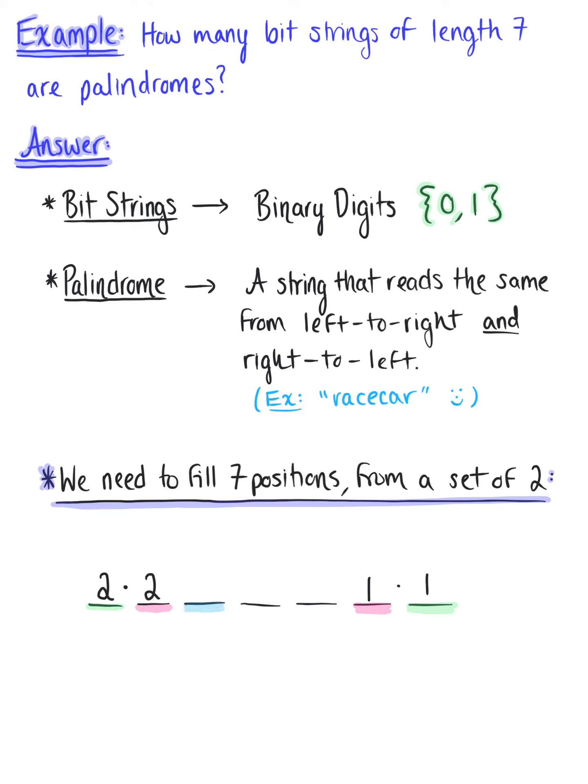Now moving to our third position, we know again that the third position has two choices, zero or one. And because this string must be a palindrome, the fifth position must match the third position, meaning the fifth position has one choice.